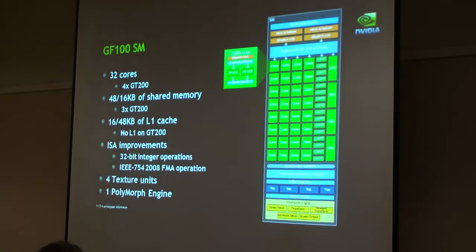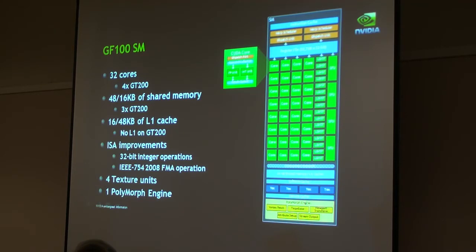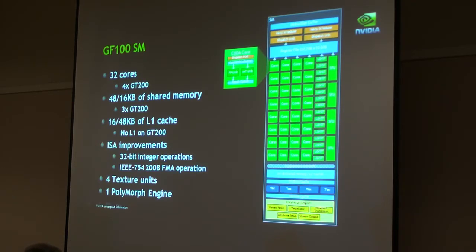Let's go on with the SM. It's got 32 CUDA cores each — that's 4X what we have in GF100. Shared memory on GF200 was 16 kilobytes only. We've got this new configurable RAM that's part L1 cache, part shared memory. We can configure either 48K shared memory and 16K L1, or the reverse. So we've got this new L1 cache as part of that shared memory.